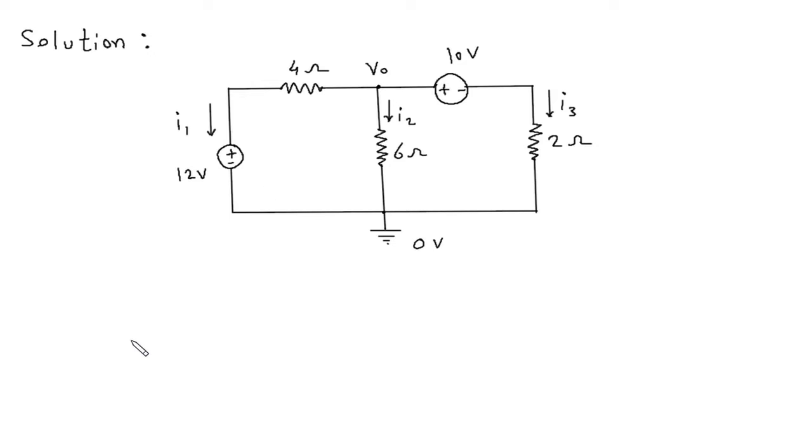Now we will apply KCL at node Vo. Entering current is 0 and leaving current is I1 plus I2 plus I3. So I1 plus I2 plus I3 equals 0.